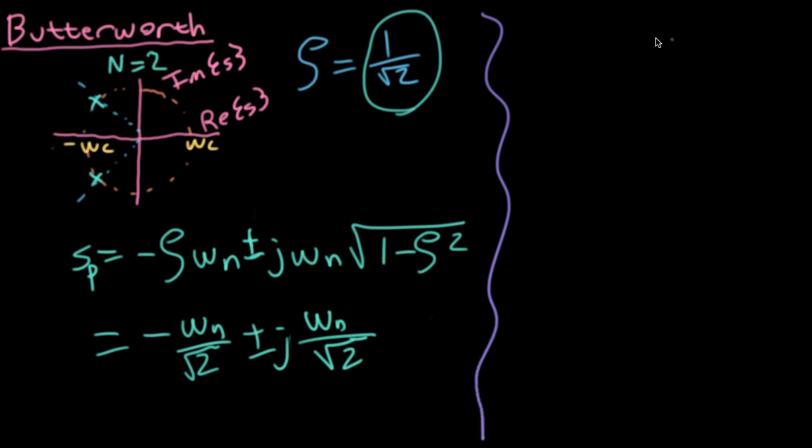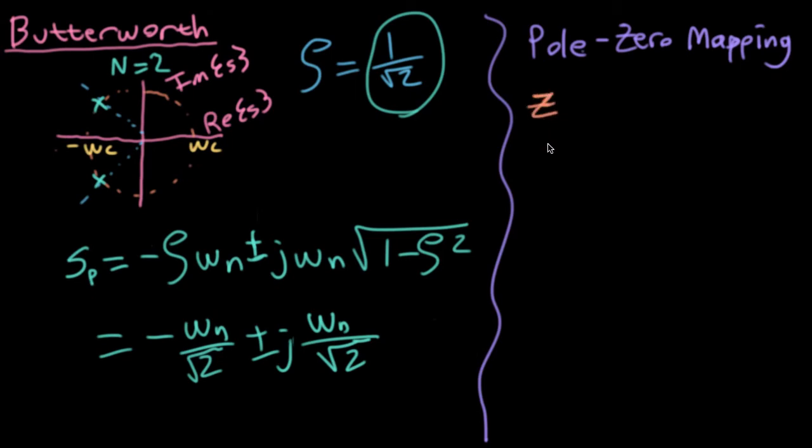So if we plug in 1 over square root of 2, we wind up with minus omega n over square root of 2 plus minus j omega n over square root of 2. That's all just setting up an example. What we want to do is develop a technique that I'm going to label pole zero mapping for taking a continuous time filter and creating a discrete time approximation of it. Now, the discrete time approximation will not operate exactly like the original continuous time filter, and in fact it can't because remember that a digital filter is going to be restricted to deal with frequencies that are less than half the sampling frequency.